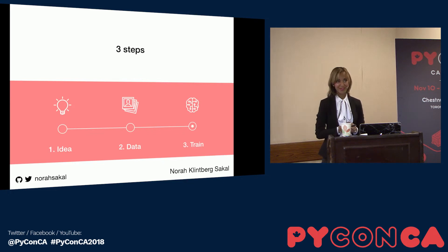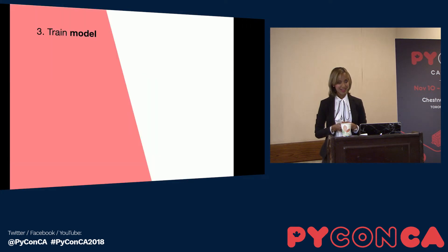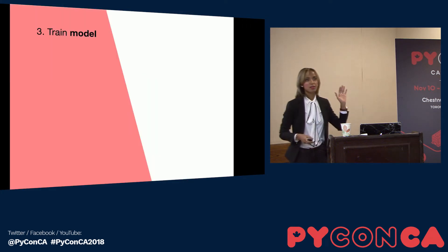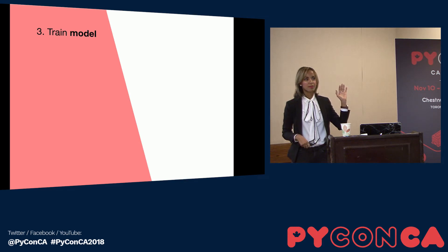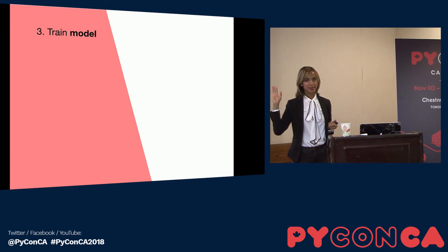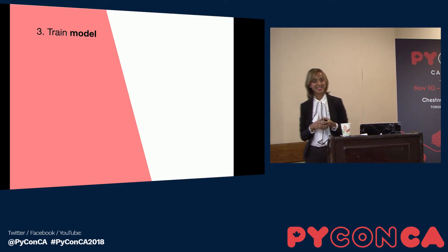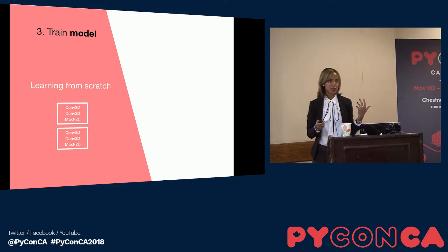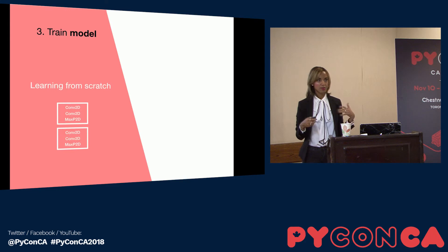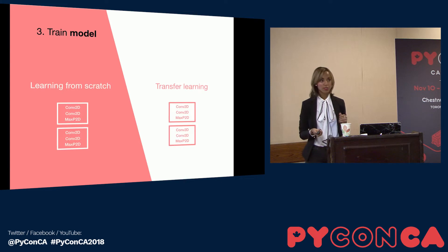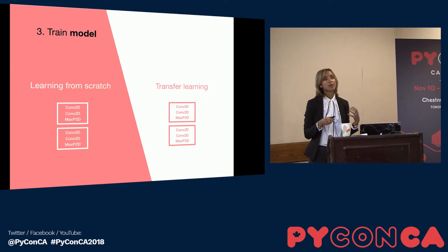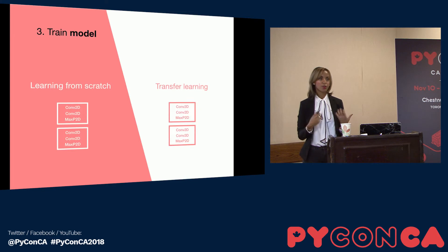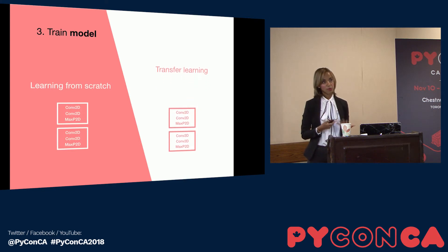The most exciting part is training the model. Essentially, there are two ways to train a model: either you train from scratch and initialize with randomly initialized weights, or you use transfer learning, where you use pre-trained weights that have been trained on a larger or more diverse dataset. That's what I did — I had a pretty small dataset, so I used pre-trained weights trained on ImageNet, which is 1.2 million images divided into 1,000 different categories.